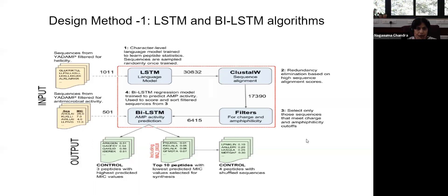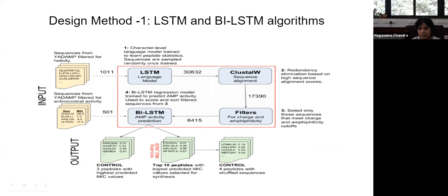We use a character-level language model trained to learn peptide statistics, combined with sequence alignment to check for repetition, functional substitutions, and multiple filters for charge, amphiphilicity, and helicity. A bi-LSTM model — two LSTMs working together, one for frequency and one for activity prediction — rank-orders the peptides. We chose the top 10 and tested them with controls based on the highest and lowest predicted MIC values and shuffled versions.